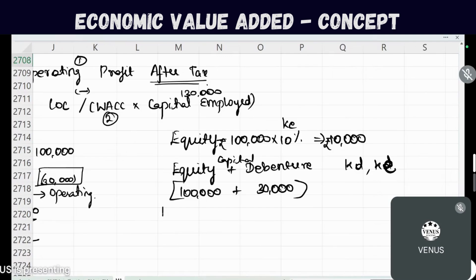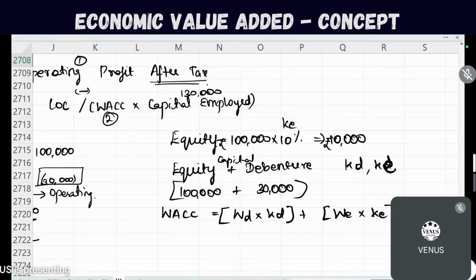If we incorporate both the cost of debt and the cost of equity, we follow the method of Weighted Average Cost of Capital. WACC is calculated as: weight of debt multiplied by cost of debt, plus weight of equity multiplied by cost of equity. From the total capital composition, you derive the weight of debt and weight of equity, giving you WACC as a percentage.